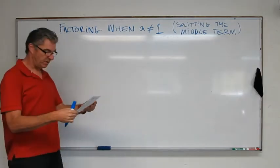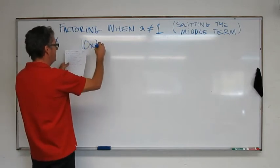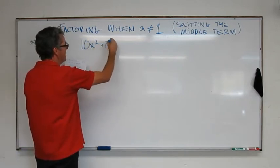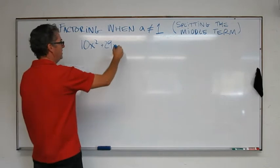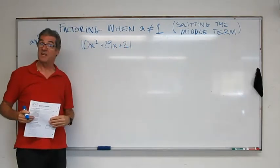Last step. 3x plus 4 times 2x plus 3. Okay, let's do one more example. 10x squared plus 29x plus 21. Pause the video. Give that a shot.